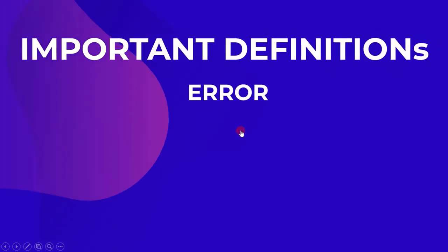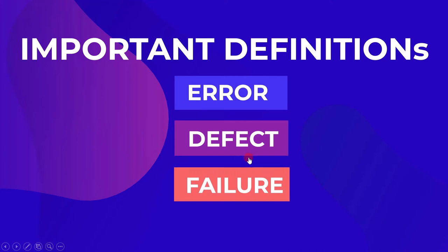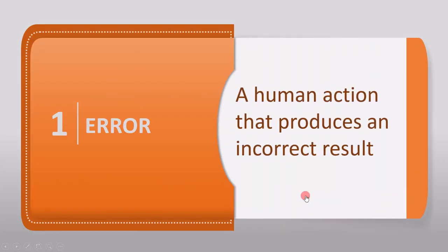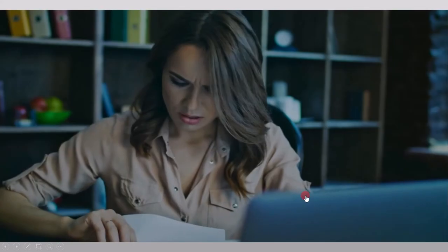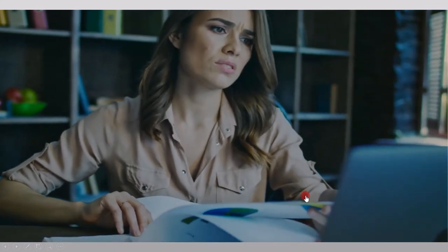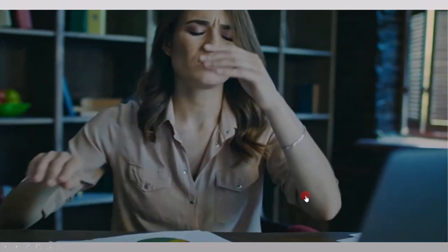First, we will cover the definitions of error, defect, and failure, and then we will see the detailed explanation. The first term is error. An error is defined as a human action that produces an incorrect result. In software testing, if the developer finds a mistake in their own code, then it is referred to as the error.